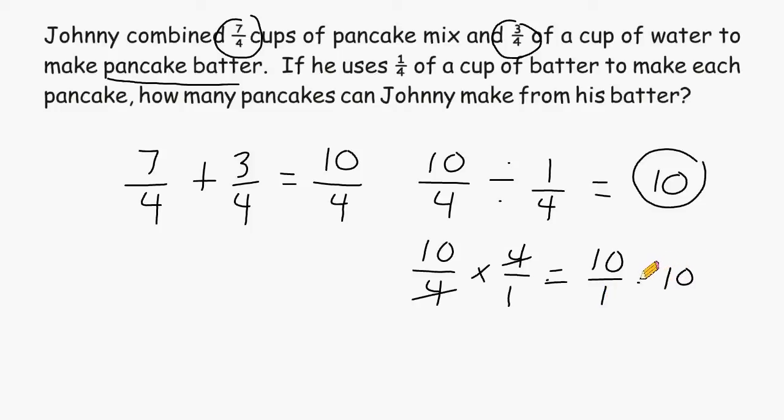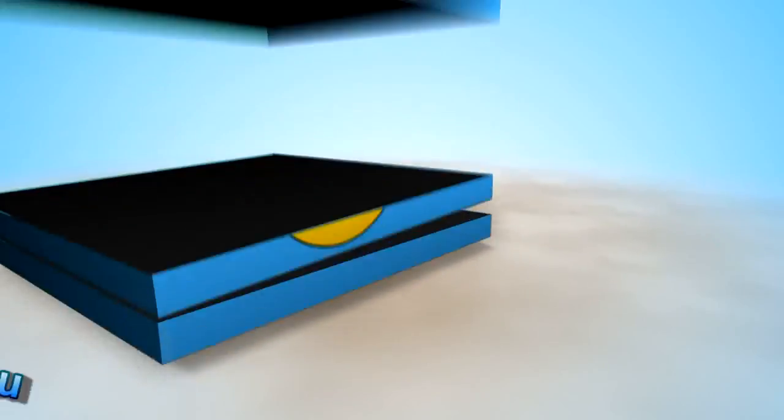But like I said earlier, you can take the numerators and simply divide those, but you can only do that if the denominators are the same. So we would say that Johnny can make 10 pancakes with the amount of batter that he has.